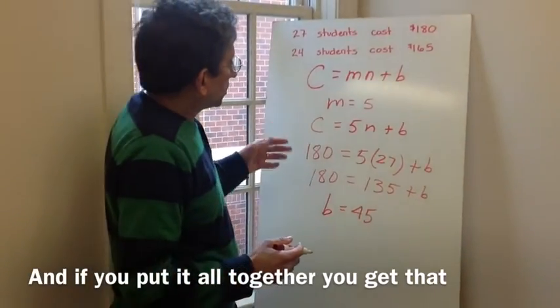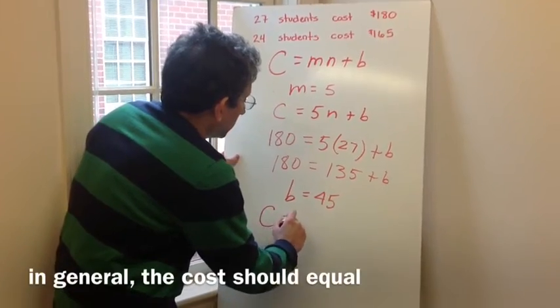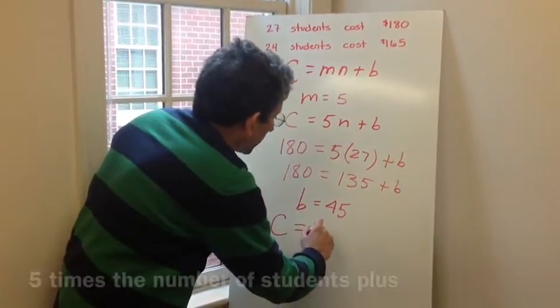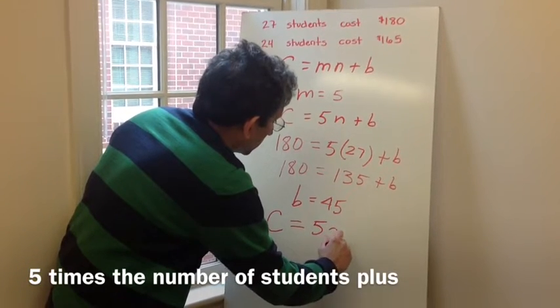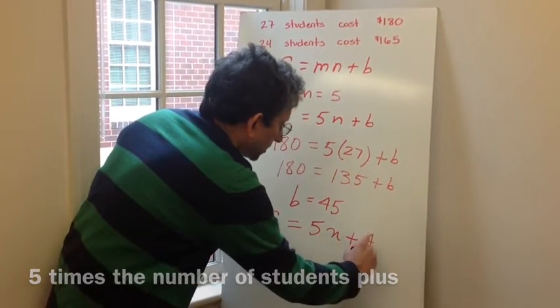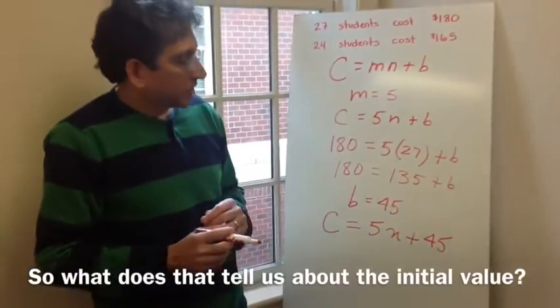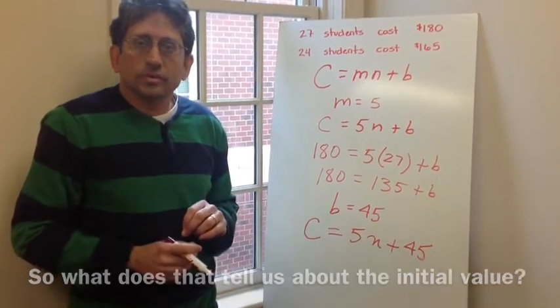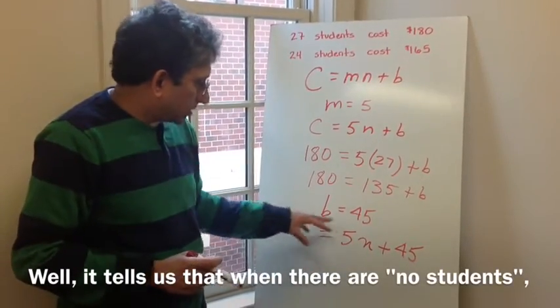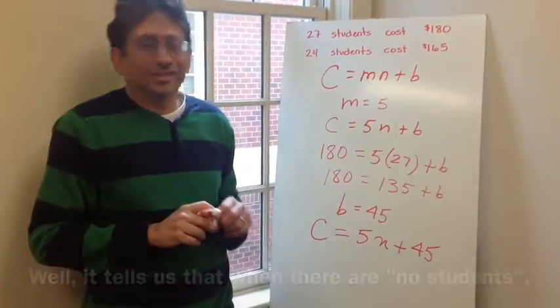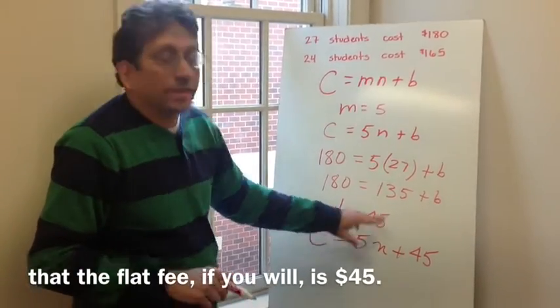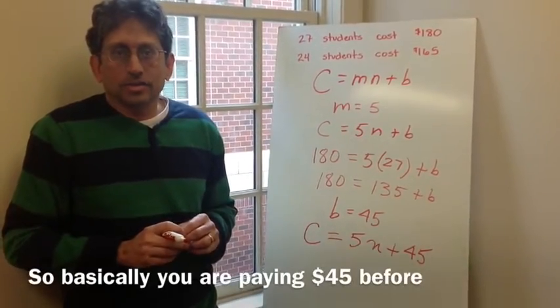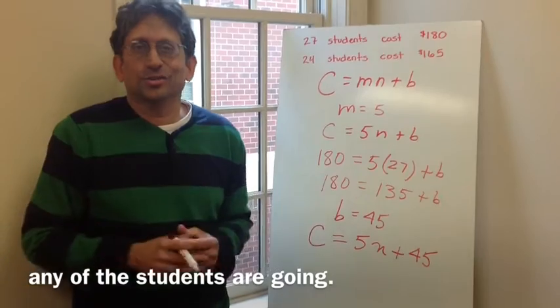And if you put it all together, you'll get that, in general, the cost should equal 5 times the number of students plus 45. So what does that tell us about the initial value? Well, it tells us that when there are no students, that the flat fee is 45 dollars. So basically you're paying 45 dollars before any of the students are going.